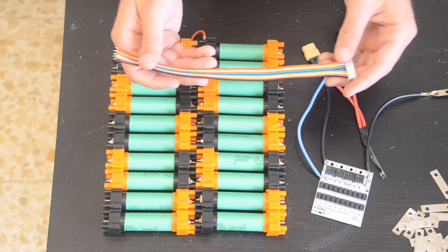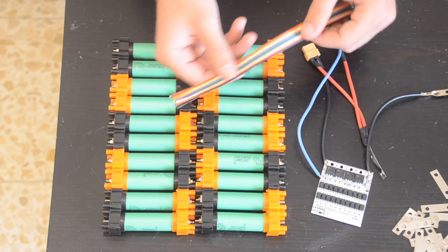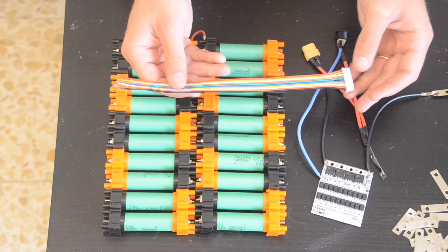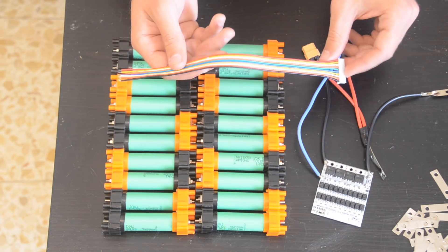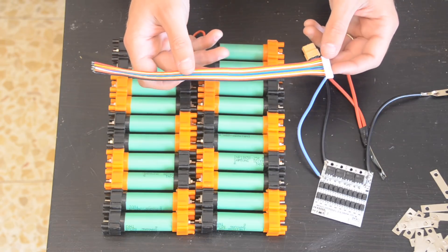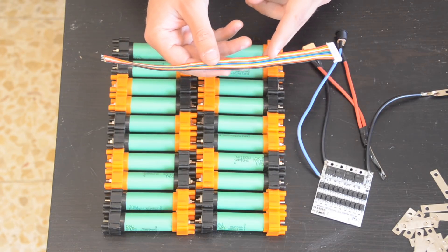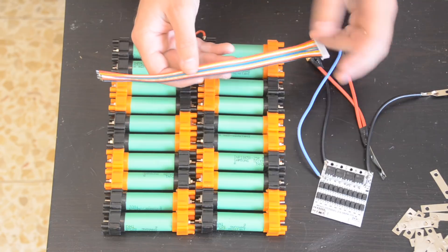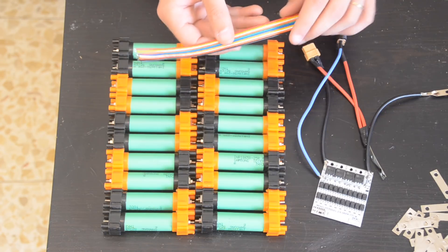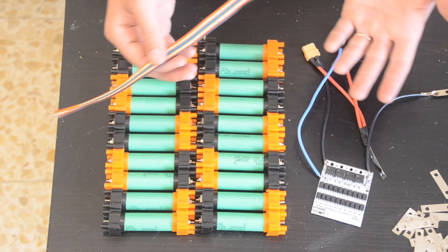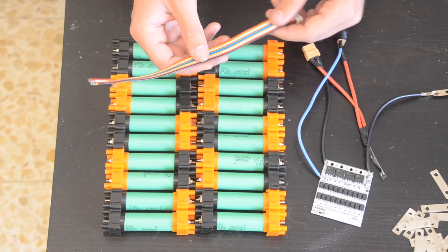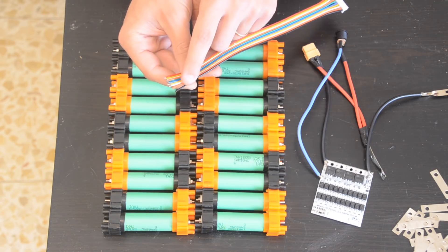Now this specific BMS is a 10 wire BMS so it's got 10 of these balance wires for a 10S battery. The other option is that you can sometimes have BMS's that have one more wire than the number of cells. So for a 10S BMS you could have 11 wires here. If you have 11 wires or if you have a BMS with one more wire than the number of cells, the first wire which will usually be black, it'll be the negative wire, will connect to the negative first terminal.